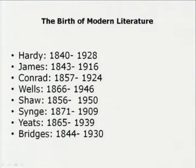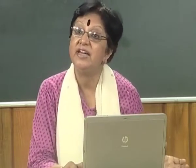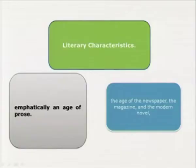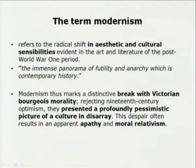The birth of modern literature — who are the key players? We have Hardy, James, Conrad, Wells, Bernard Shaw, Yeats, and Bridges, just to name a few. Like the Augustan period, the modern period was emphatically an age of prose — the age of the newspaper, the magazine, and the modern novel. It is almost as if the Augustan period has been reinstated in the modern period.